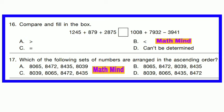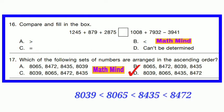Question No. 17: Which of the following sets of numbers are arranged in ascending order? Option D is correct: 8039 is smaller than 8065, both are smaller than 8435, and all are smaller than 8472.